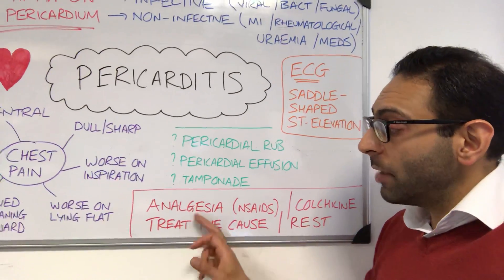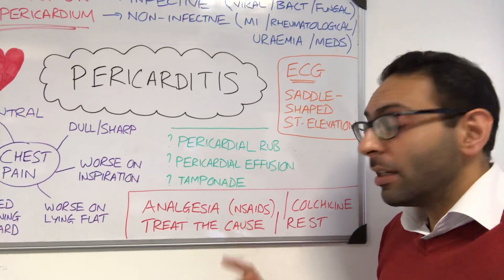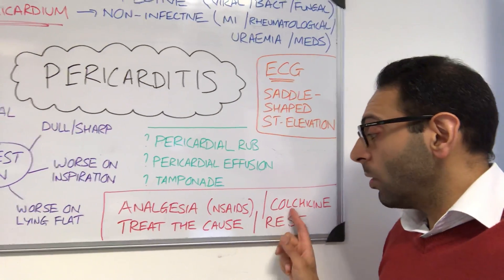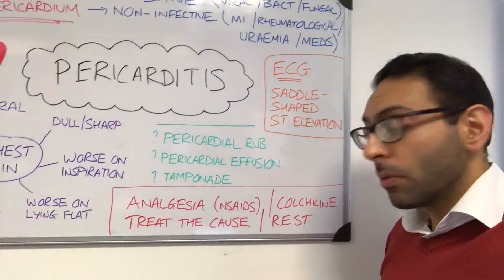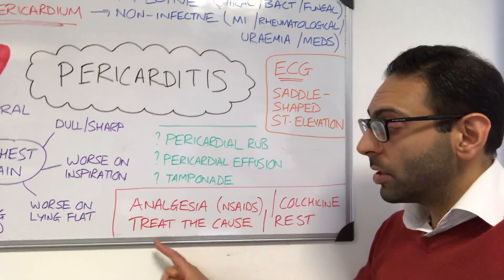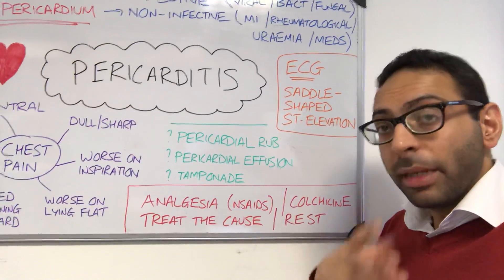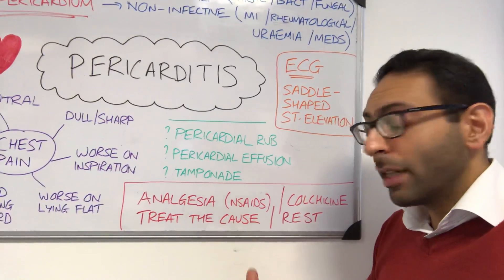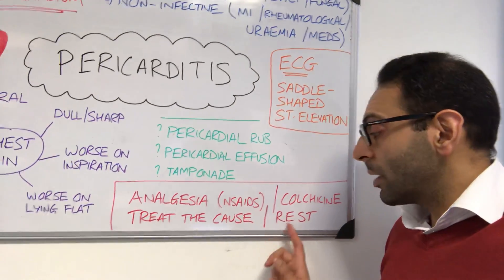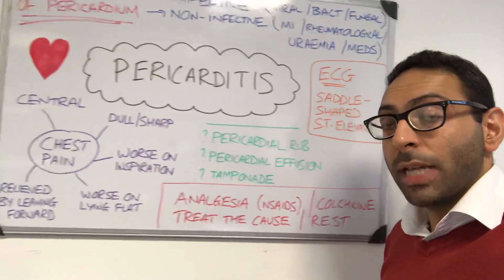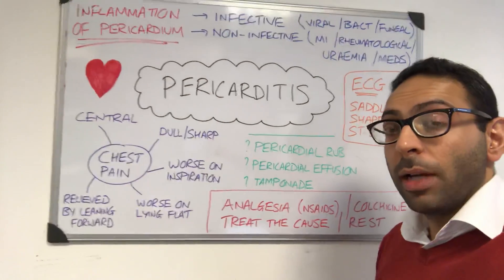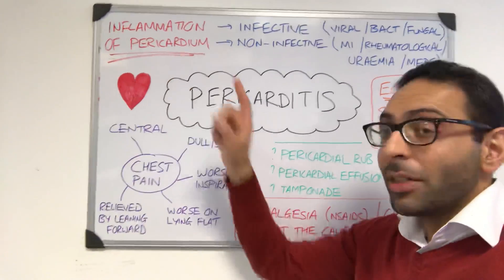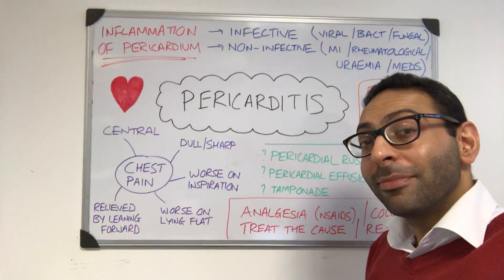In terms of management, analgesia is key — NSAIDs are first-line, but colchicine also has a role. You treat the underlying cause: remove the offending medication or treat the infection causing it. Rest and supportive management are important as well. So, pericarditis — inflammation of the pericardium — hope this helps.